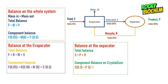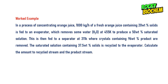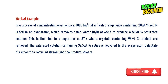Let's try out this example to make what you've learned look practical. In a process of concentrating orange juice, 100 kg per hour of fresh orange juice containing 20% by weight solids is fed to an evaporator, which removes water at 455 Kelvin to produce a 50% by weight saturated solution. This is then fed to a separator at 311 Kelvin, where crystals containing 96% by weight of products are removed. The saturated solution containing 37.5% by weight solids is recycled to the evaporator. Calculate the amount of the recycle stream and the product stream.